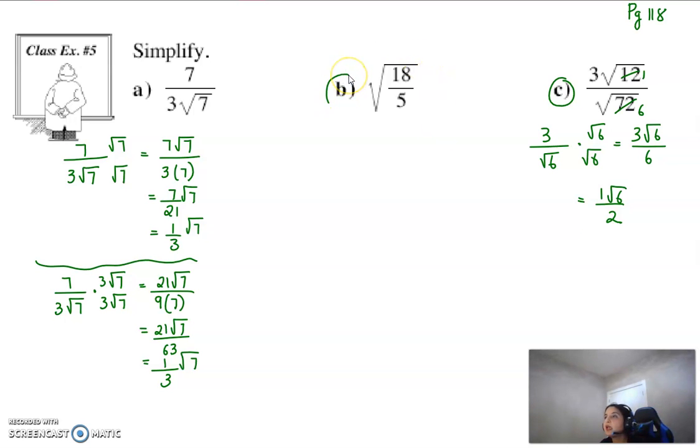I want you to pause the video again. Try part B. Remember root 18 over 5, you can write them as two separate. You can write them as root 18 and root 5. And then try this question. And if you get the right answer, you can move to the next example. Otherwise, we'll resume this video.